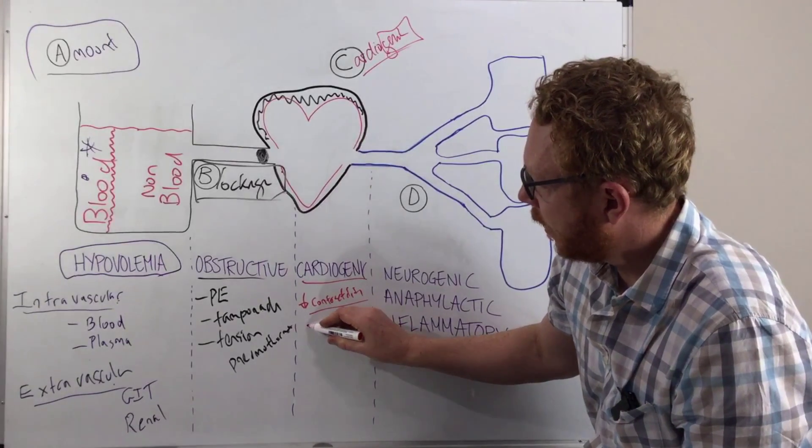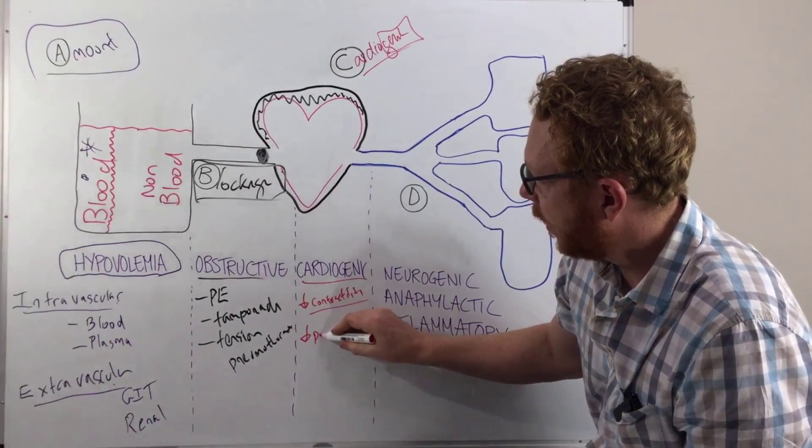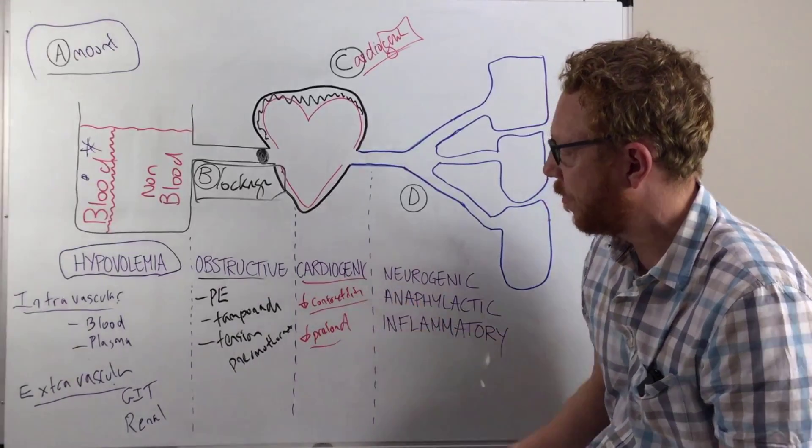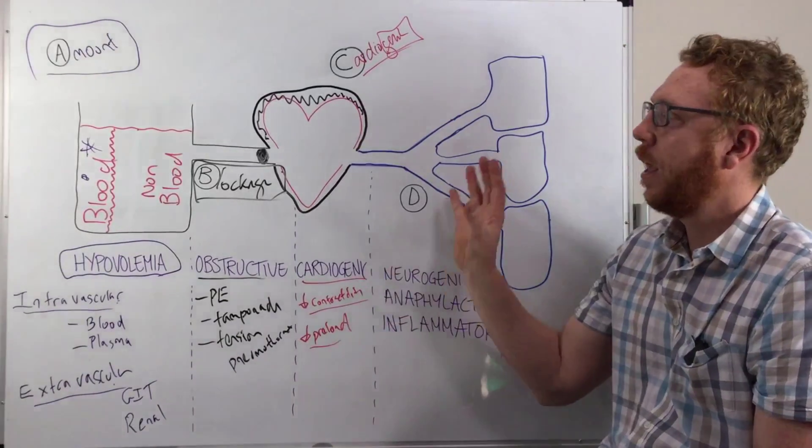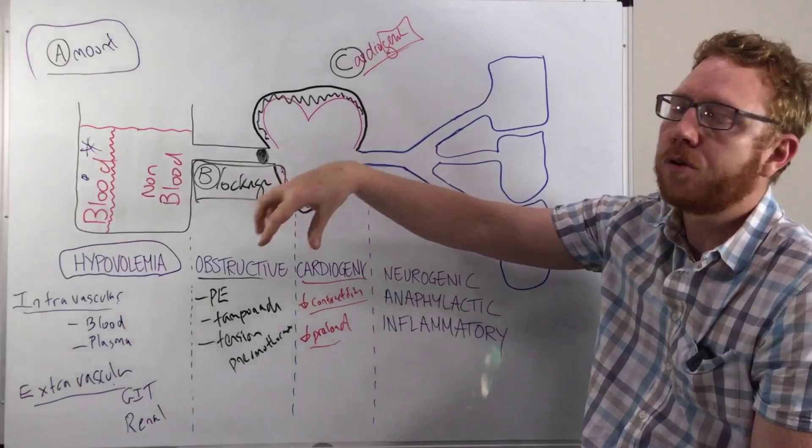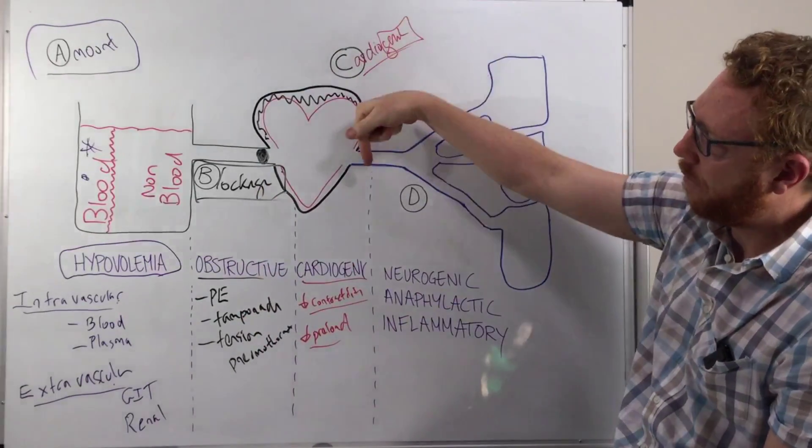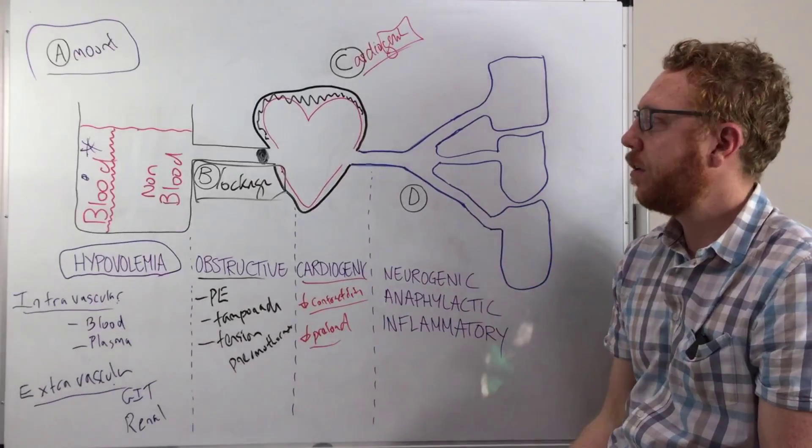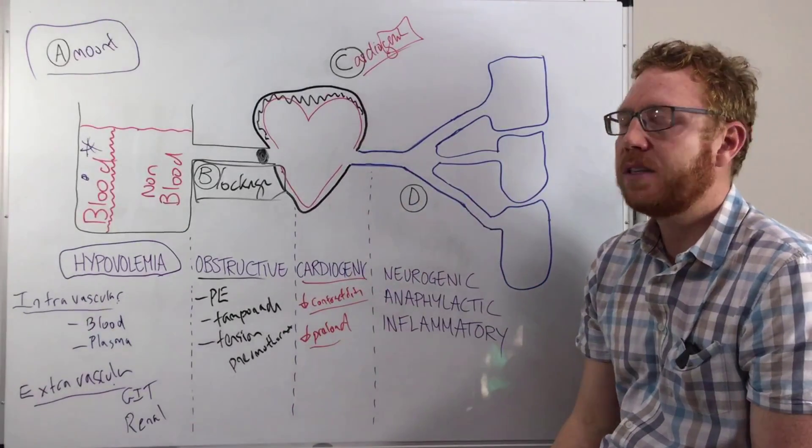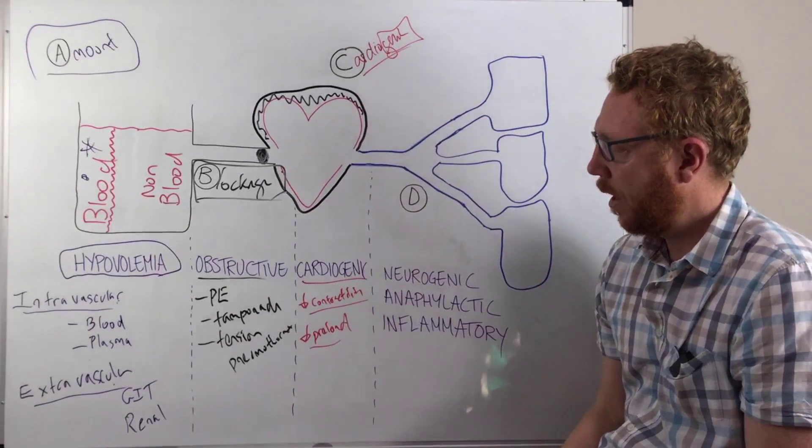Another one would be, let's say, a decrease in preload cause. A good example of decrease in preload would be if you had a MI, but on the right ventricle. Therefore, the right ventricle's not pushing blood out to the lungs and then to the left ventricle. Therefore, it's not loading. Therefore, you have a decrease in output. Therefore, you have a cardiogenic shock. That's two.